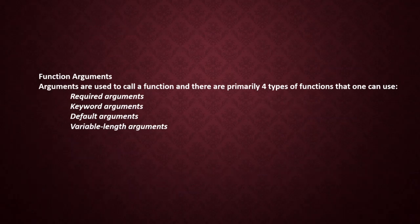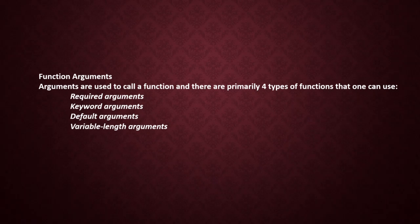Next, we are going to see function arguments. The values that are passed to a function are divided into four types: required arguments, keyword arguments, default arguments, and variable-length arguments. The explanation of these argument types will be dealt with in the next class. Thank you, have a nice day — stay home and stay safe.